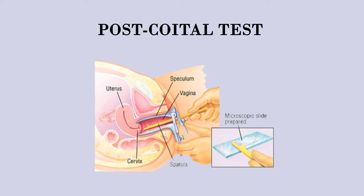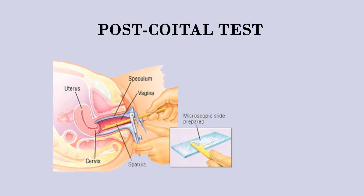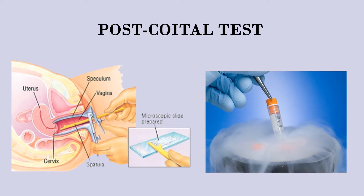A post-coital test involves the doctor taking a sample of mucus from the woman's vagina. She must have the test during her fertile days and within 12 hours after she and her partner have sex. The test tells the doctor if the man's sperm can survive in the woman's cervical mucus.